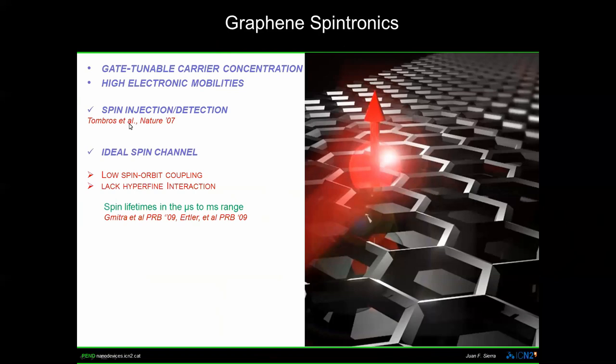Graphene is an extraordinary material from many points of view, but I would like to show you why graphene is relevant for spintronics. Beyond being a gate-tunable material in which you can control by electrostatic gating what is the nature of the carriers in the system, it also has high electronic mobilities. What is particularly relevant for spintronics is that you can inject and detect spins in graphene. This was experimentally demonstrated in a breakthrough experiment in the Van Wees group in Groningen — graphene can serve as a spin channel.